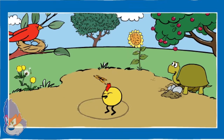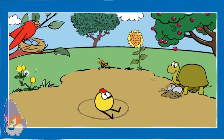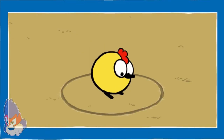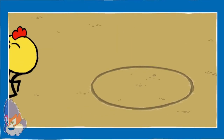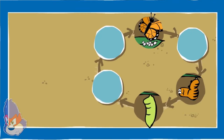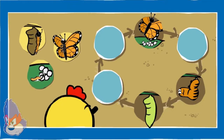Let's explore a different natural cycle with Peep. Butterfly! Let's look at butterflies. Do you know how a caterpillar becomes a butterfly? Help Peep put things in the right order. Drag the pictures onto the spots in the circle where you think they go. Think about what happens first and what happens next.